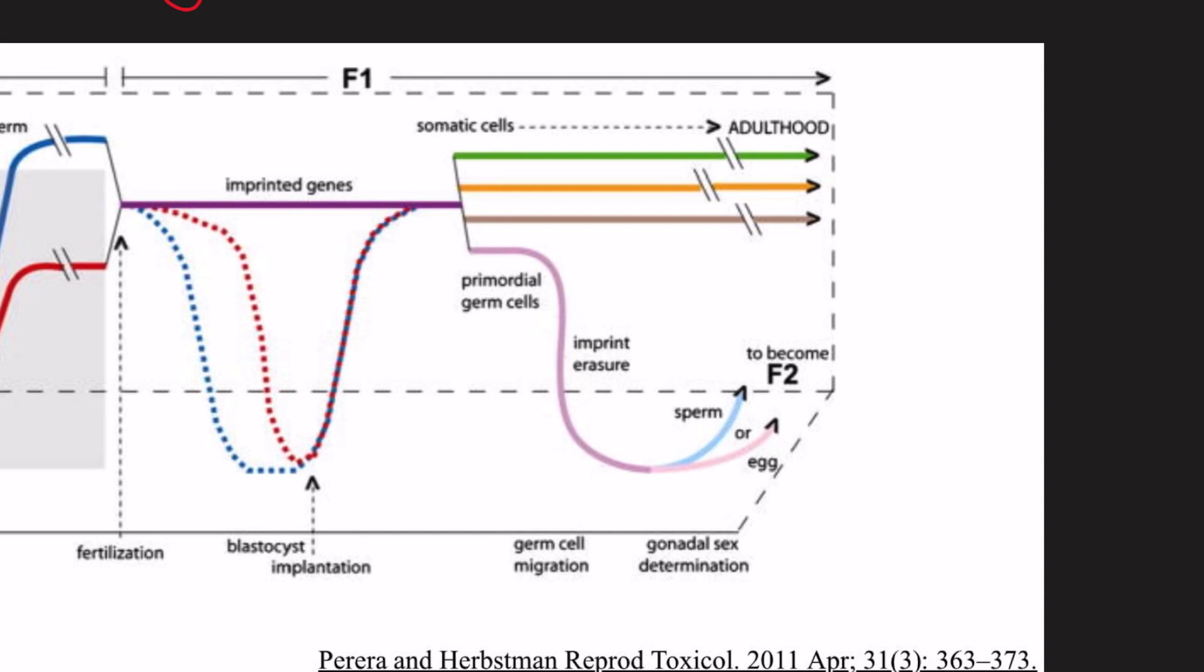Imprinted genes, which is the purple line, maintain their methylation marks throughout this reprogramming and allowing for the inheritance of parental-specific monoallelic expression throughout all of adulthood. All the imprinted genes are subsequently remethylated once the embryo reaches the early blastocyst stage.